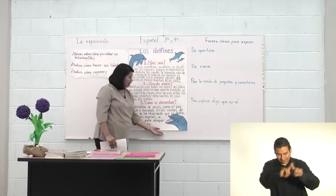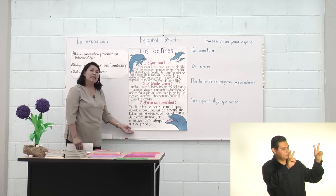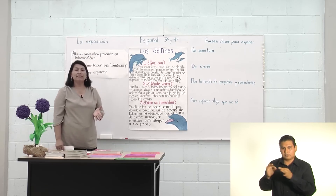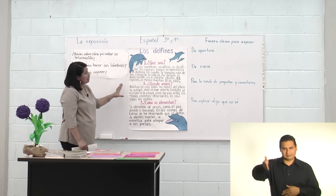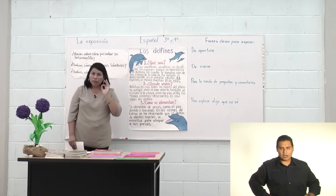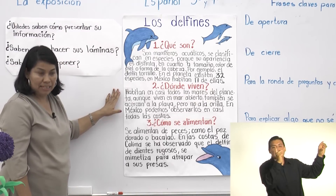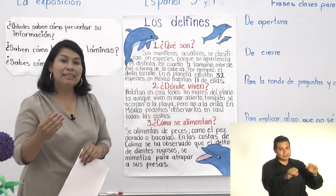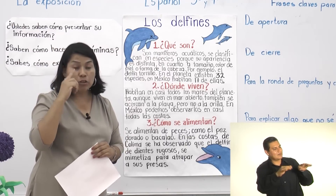Esta es una lámina que les traje el día de hoy como muestra, en respuesta al trabajo de consulta. Recuerden que nosotros iniciamos este tema planteándonos preguntas sobre los delfines. Esta lámina responde a dos características principales. La primera: cuando hagan una lámina para presentarla, debe tener letras grandes, letras claras, sin errores de ortografía. ¿Por qué grandes? Porque las tienen que poder leer todos los niños de la clase, incluso el niño que está hasta en la última fila.